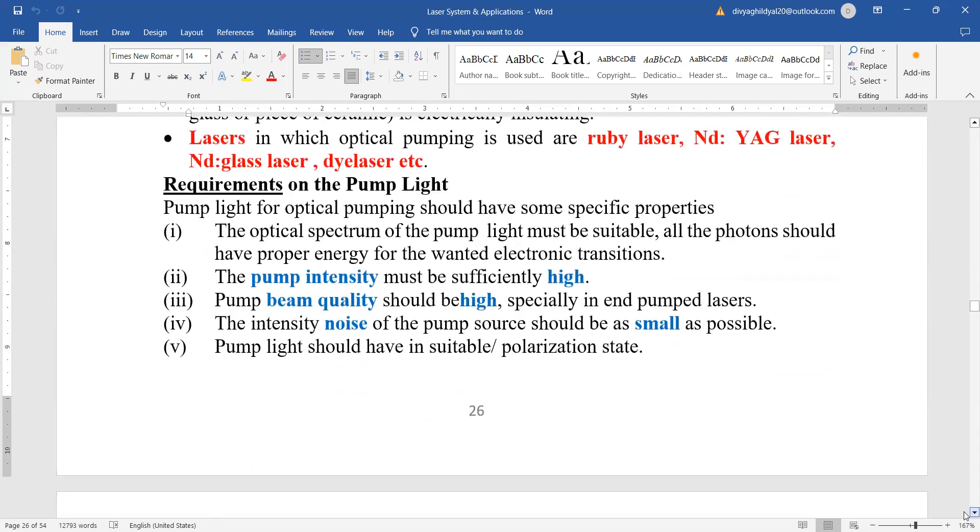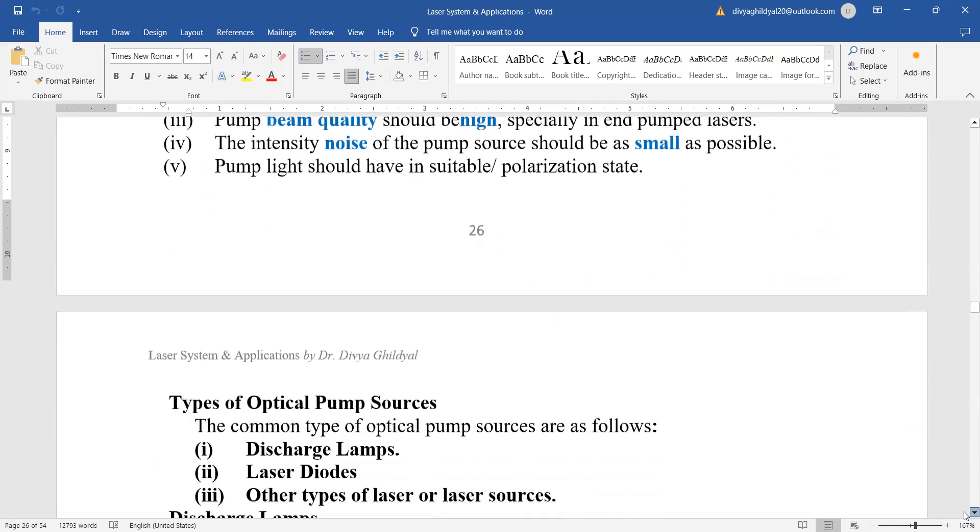What are the requirements for the pump light? The optical spectrum of the pump light must be suitable. All the photons should have proper energy. The pump intensity should be sufficiently high. Pump beam quality should be high. Intensity noise of the pump source should be as small as possible and pump light should have suitable polarization state.